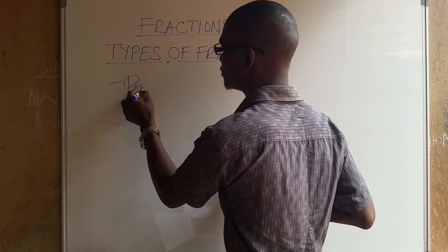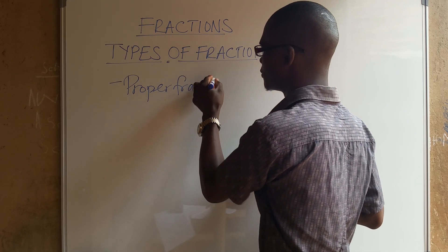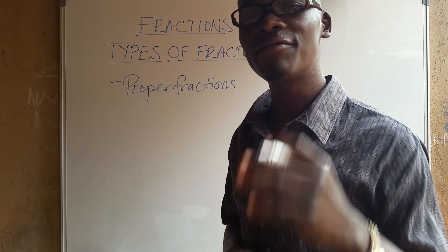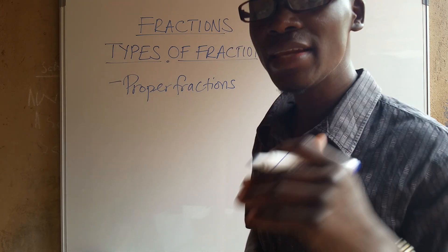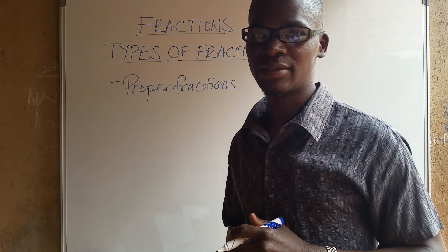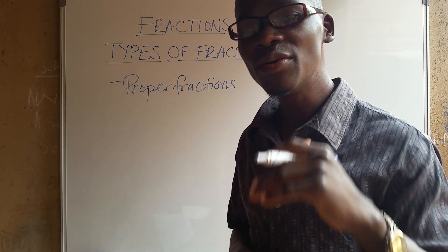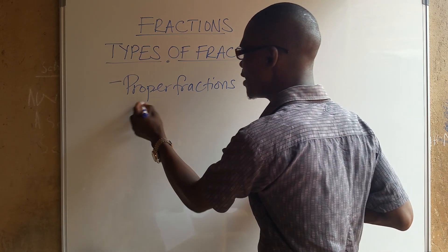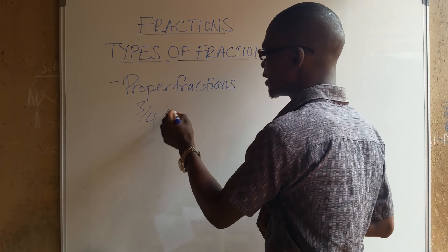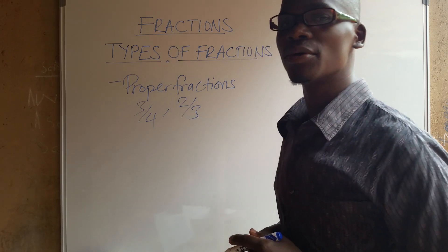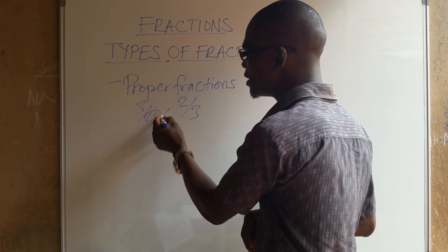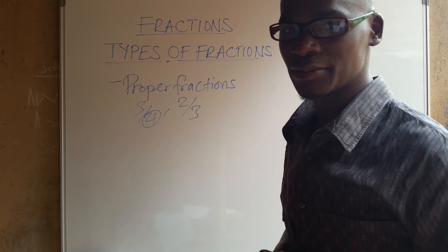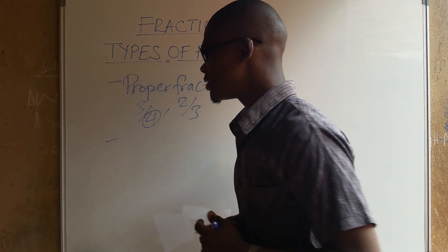The first is the proper fraction. A proper fraction is a fraction whose numerator is less than the denominator, or a fraction whose denominator is greater than the numerator. For instance, we can have 3/4 or 2/3. So a fraction whose denominator is greater than the numerator is a proper fraction.